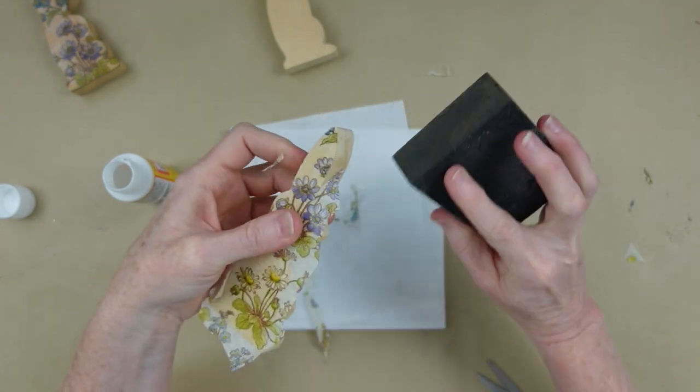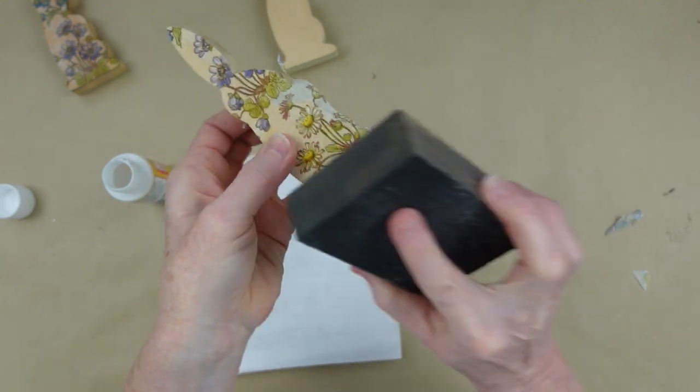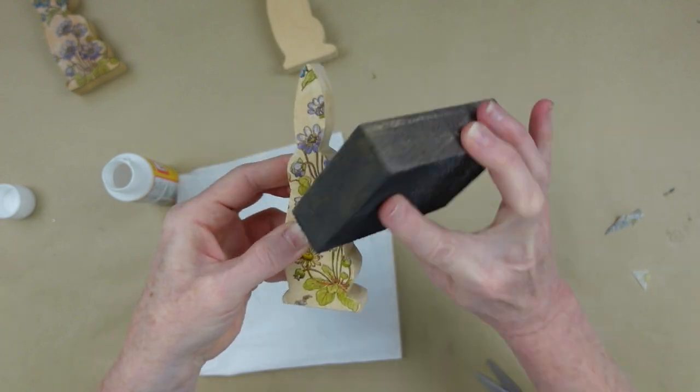Then I'm going to take my sanding block and just go downward and away on the edges, all the way around the bunny, to make a nice, clean finish. You can see the edges - these are just natural wood. I didn't paint anything underneath. You could probably paint the whole bunny white if you wanted to really make that pattern pop. But for me, I like it this way.